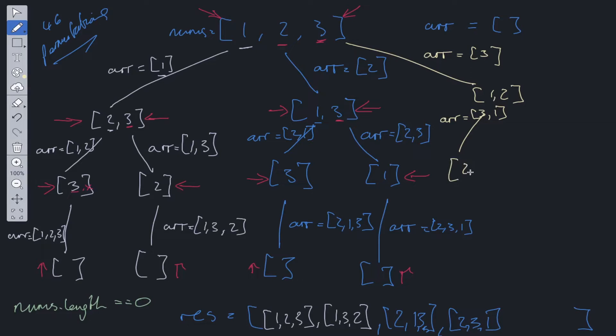We're left with two, we take two. So the array equals three, one, two. And then we have an empty array. So we push into res. Three, one, two. Now we backtrack.